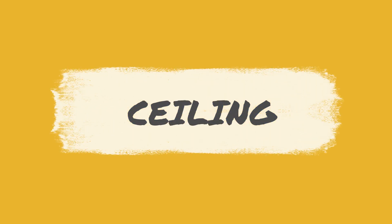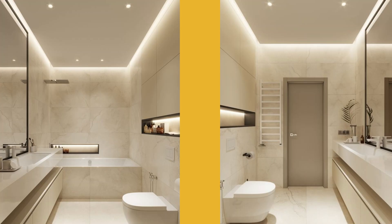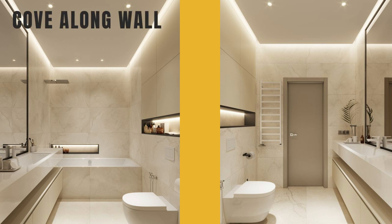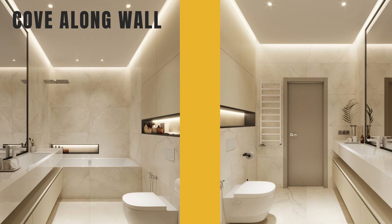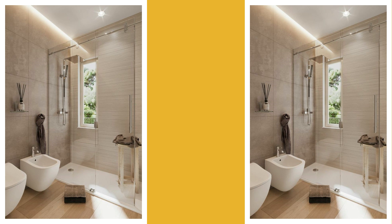Ceiling. Opt for a flat ceiling design, complemented by coves along the walls. For an added touch, consider a circular cove above specific points, like over the closet. Remember, wall tiles should reach the highest point of the cove — this ensures any alignment discrepancies remain hidden.